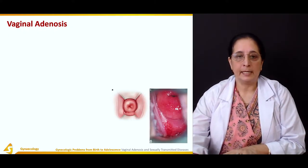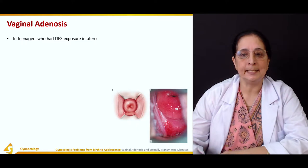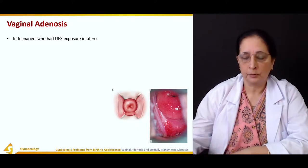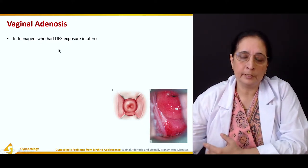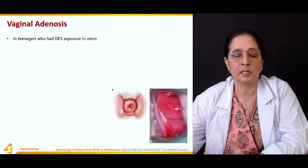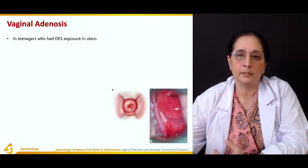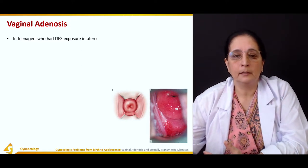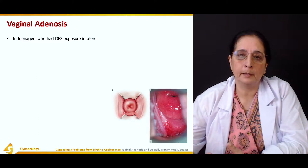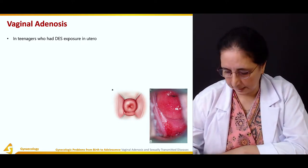Vaginal adenosis is common in teenagers who had DES exposure in utero. DES is diethylstilbestrol. Mothers who used DES during pregnancy — usually for abortion — can result in the baby born having vaginal adenosis if they were exposed to DES in utero.